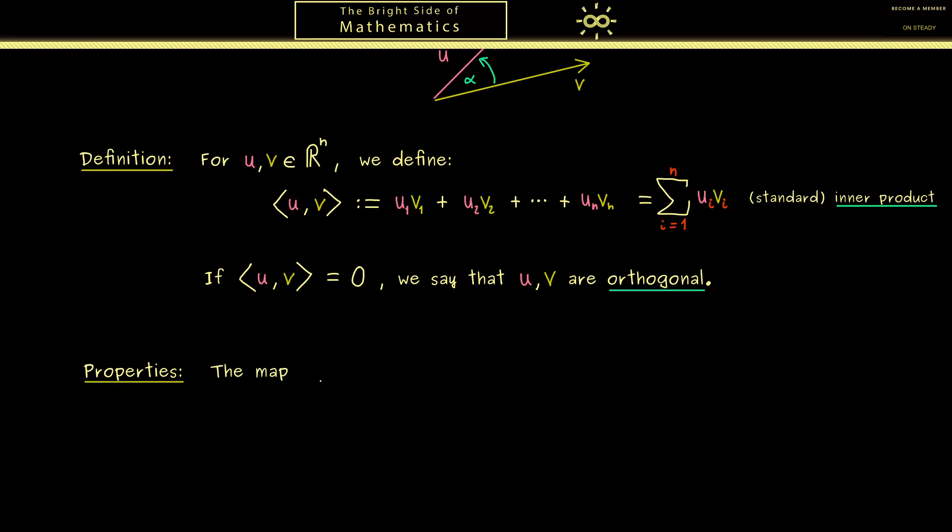And essentially we have exactly 3. Now the first thing you have to note is that the inner product defines a map. And this map has two inputs given as vectors from R^n, and the output is a real number. So usually we just denote the map by the pointed brackets where we use dots for the inputs. And now this map that is defined by the sum above has three properties.